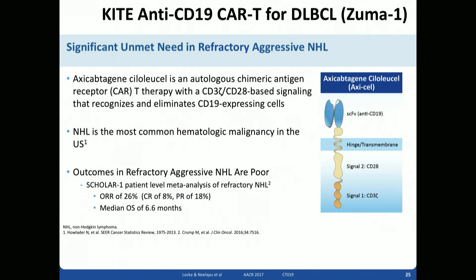There are three companies making anti-CD19 CAR T-cells that are going to be approved for diffuse large B-cell lymphoma before the end of the year. The first and farthest along is KITE, with data from the Zuma trial — presented at ASH, ASCO, and most recently at Lugano. This is axi-cabtagene ciloleucel. The context comes from the Scholar 1 trial, where patients with refractory large-cell lymphoma had a CR rate of only 8% with standard therapy and a median survival of around six months. That was the population the KITE trial studied.